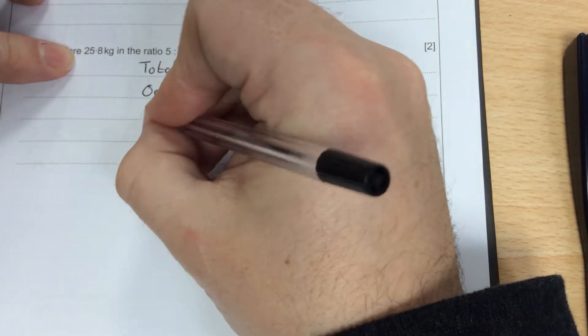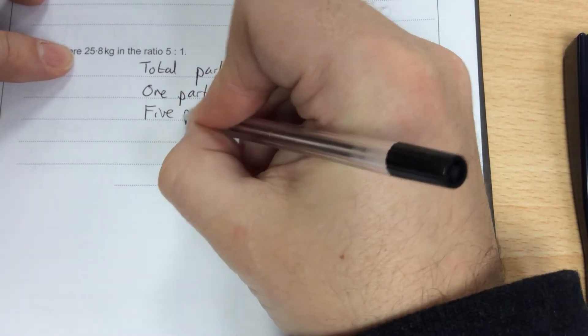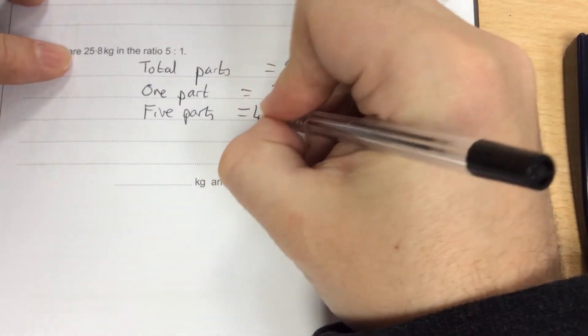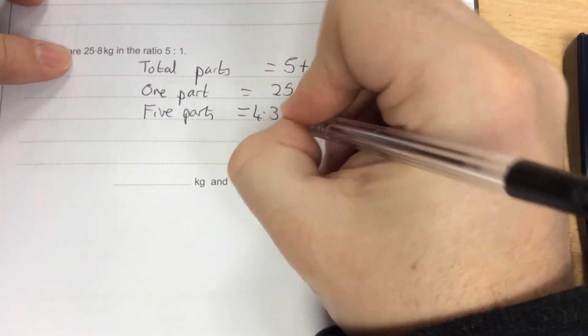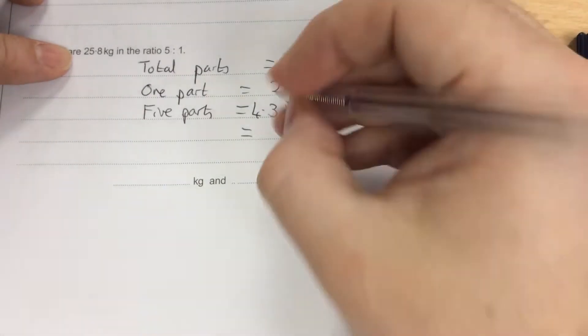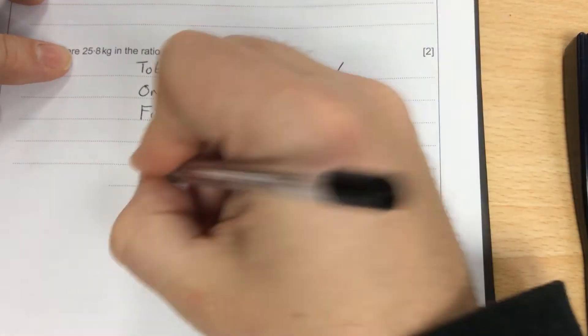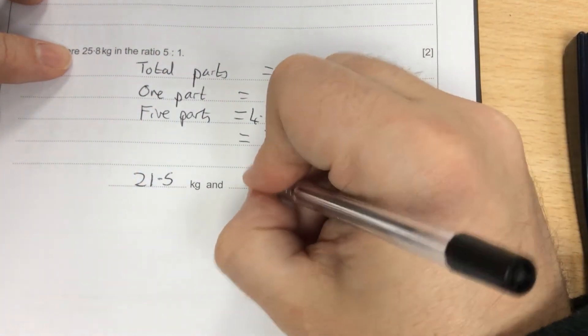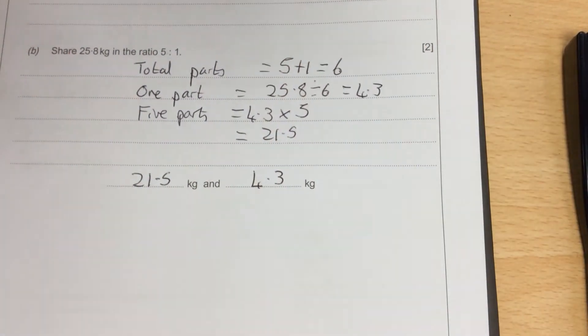And then you want to also work out 5 parts. So 5 parts would be 4.3 times 5, which is 21.5. So the answer to this is 21.5 kilograms and 4.3 kilograms.